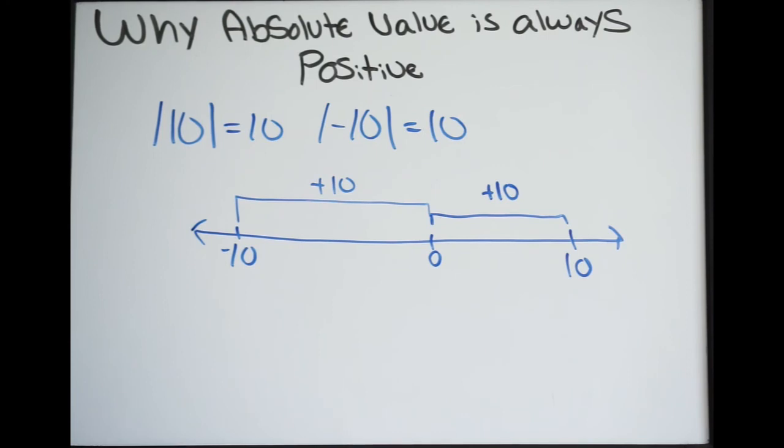Absolute value is always asking for the distance from the origin, or 0. Hence, it will always be positive. That's why absolute value is always positive.